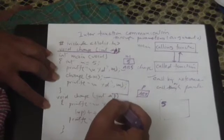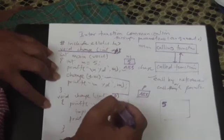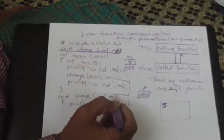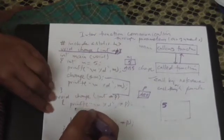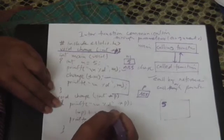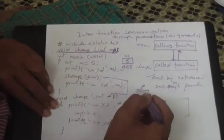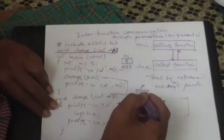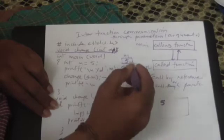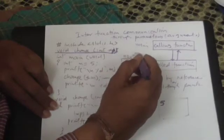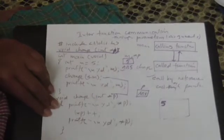And once you have received it, so this call through pointer or call by reference, then the first statement is a printf percentage d p. So we have written this indirection operation star p. So the moment it has received this, the other name for this m will be star p or asterisk p.